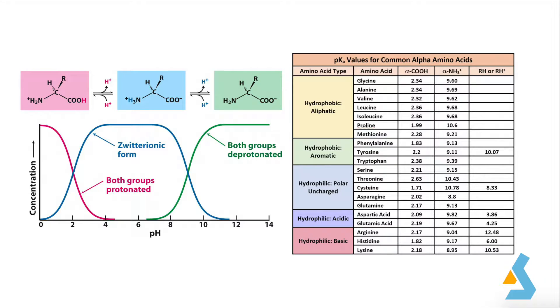In the zwitterion form, the amino acids contain both a negative and positive charge. When the pH of the environment changes, amino acids lose or gain hydrogen ions.